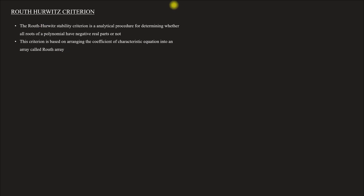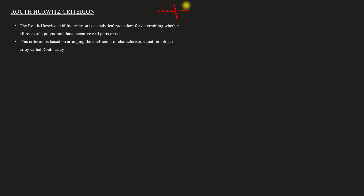For stability, we consider the pole locations. The left side of the s-plane means the system is stable, and the right side means the system is unstable. On the imaginary axis, we call it a marginally stable system. This stability condition is determined using the Routh-Hurwitz criteria.